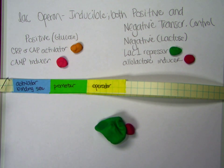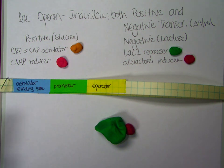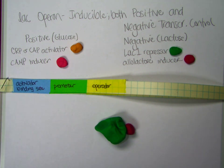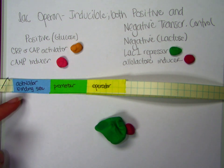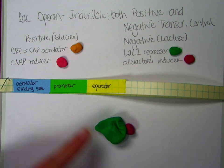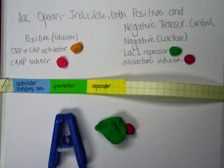However, since the lac operon additionally requires positive transcriptional regulation, the RNA polymerase is not having the best luck at finding and attaching to the promoter. Because to be at its optimal transcription, the RNA polymerase requires the activator at the activator binding site. And so even though we've removed the repressor, the RNA polymerase is still just kind of hanging out. It's not attached to the promoter and it's not transcribing the gene.